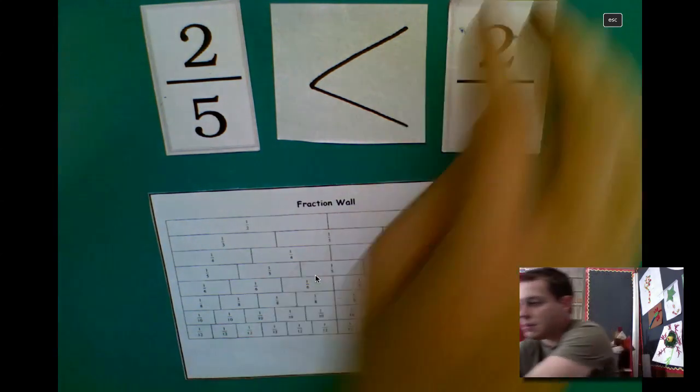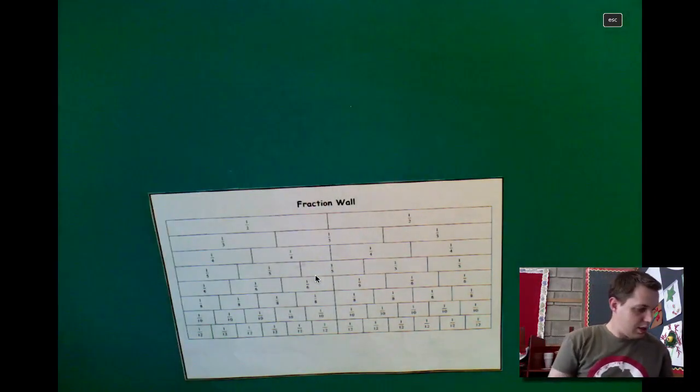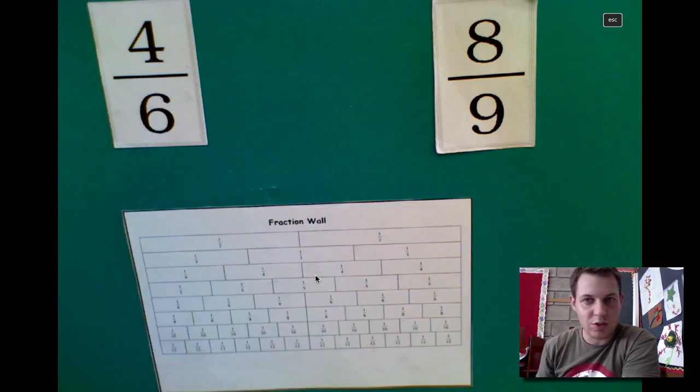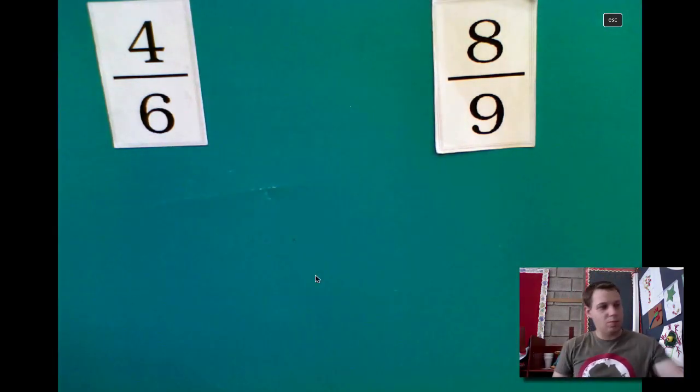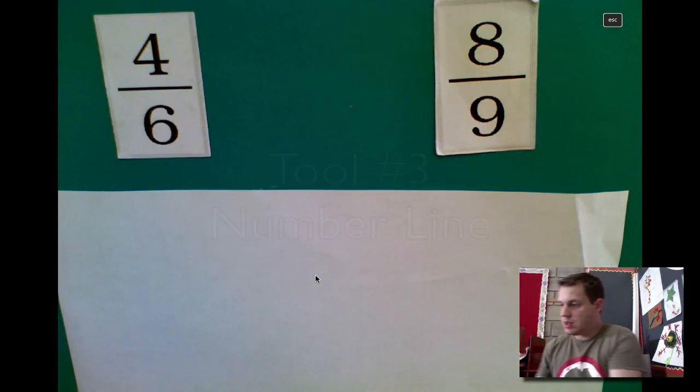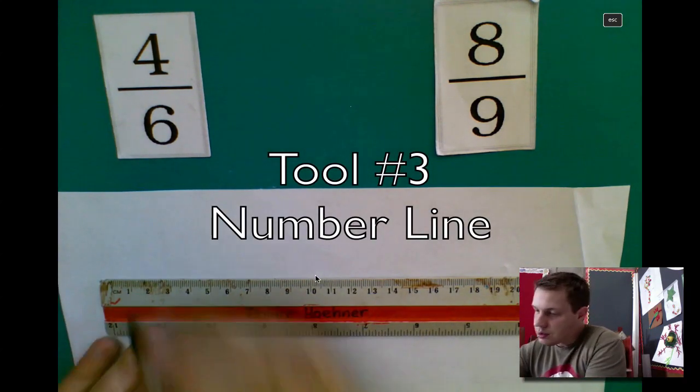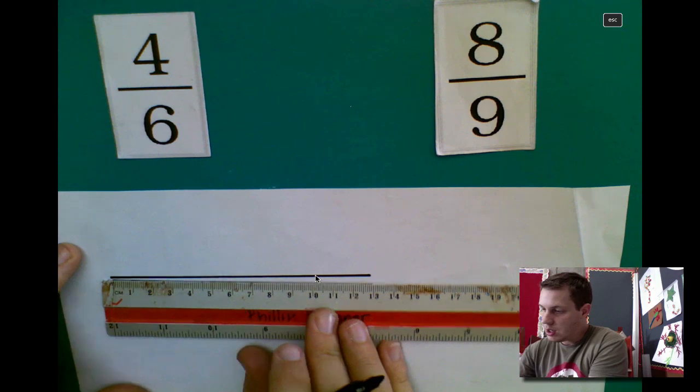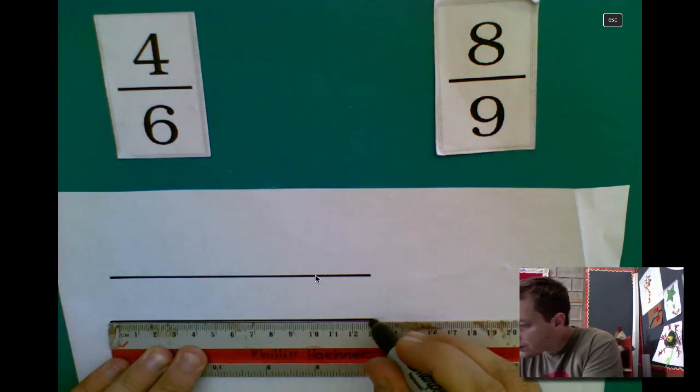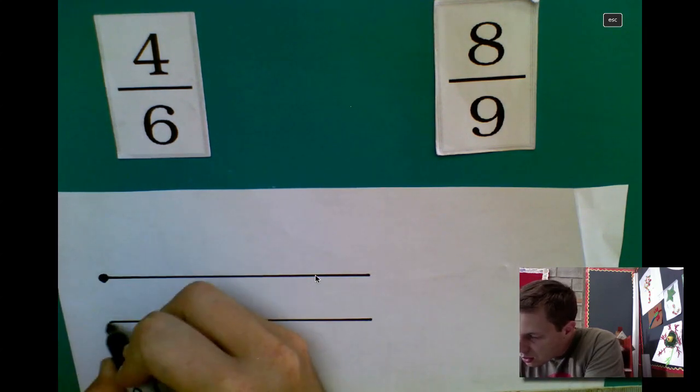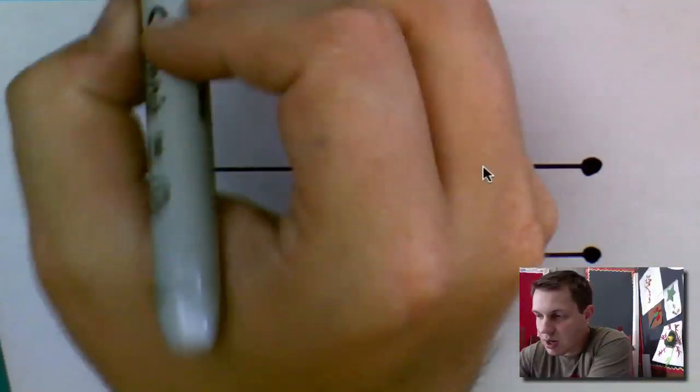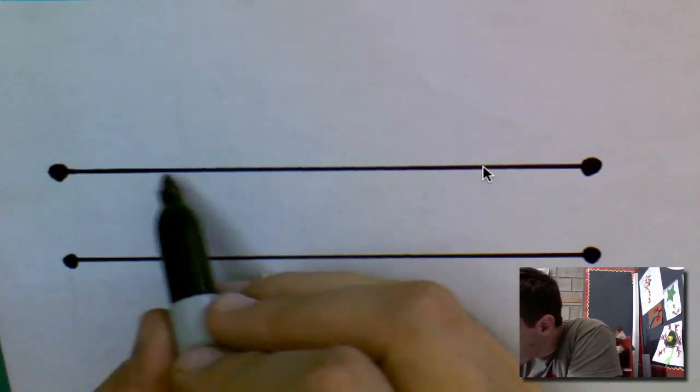Now, sometimes we might run into a little problem like this. We have 4/6 and 8/9. And if you look on our fraction wall, there are no ninths. So we've got to come up with another solution. What we can do is we can draw some number lines. I'm going to draw one line, then I'm going to draw another line of the same length. Put my end point.